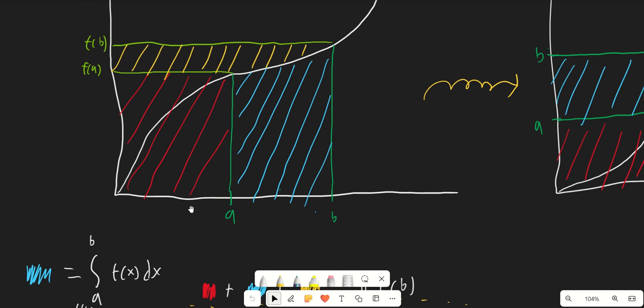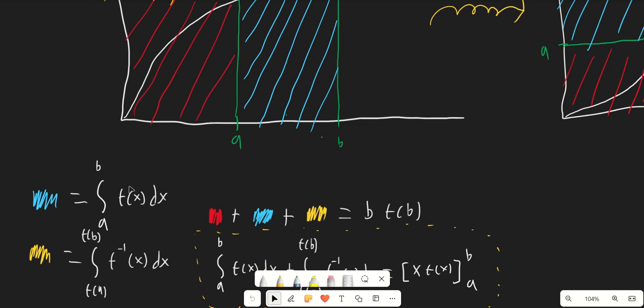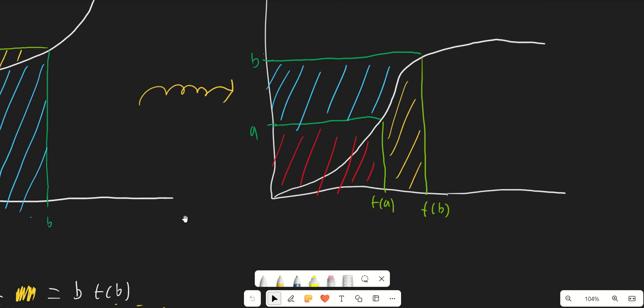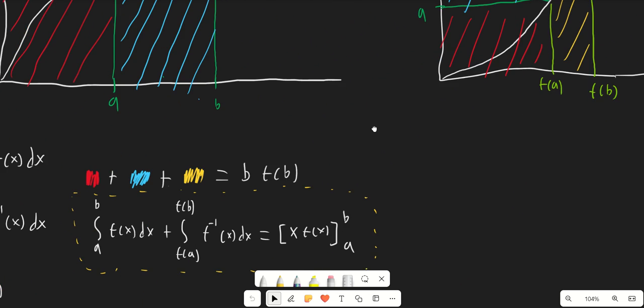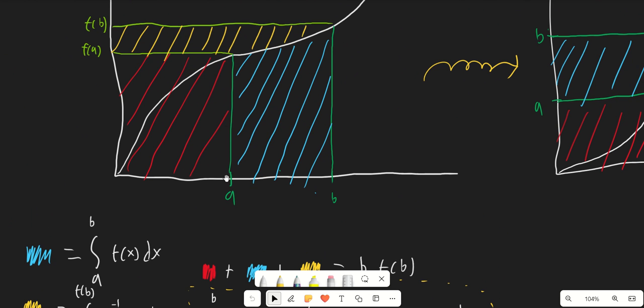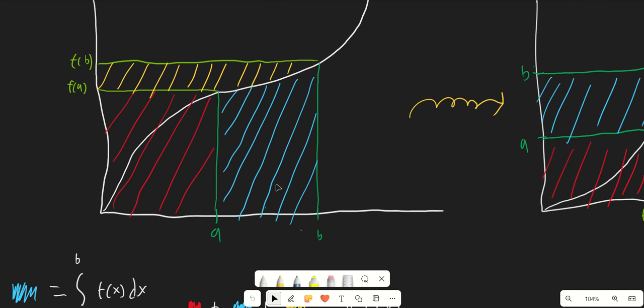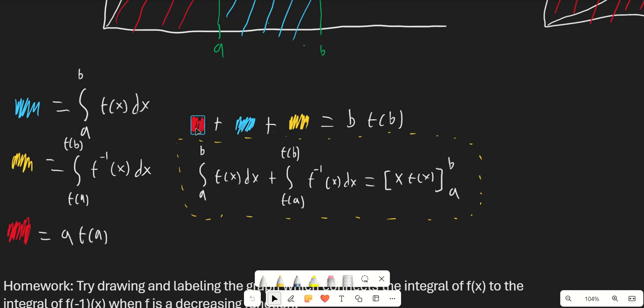If we take these three areas and add them together, we get a rectangle with side length b and side length f(b), so that area is b times f(b), which equals the sum of the three shaded regions. The blue shaded region is the integral from a to b of f(x) dx. The yellow region is the integral from f(a) to f(b) of f inverse of x. The red region has area a times f(a), and the overall rectangle has area b times f of b.